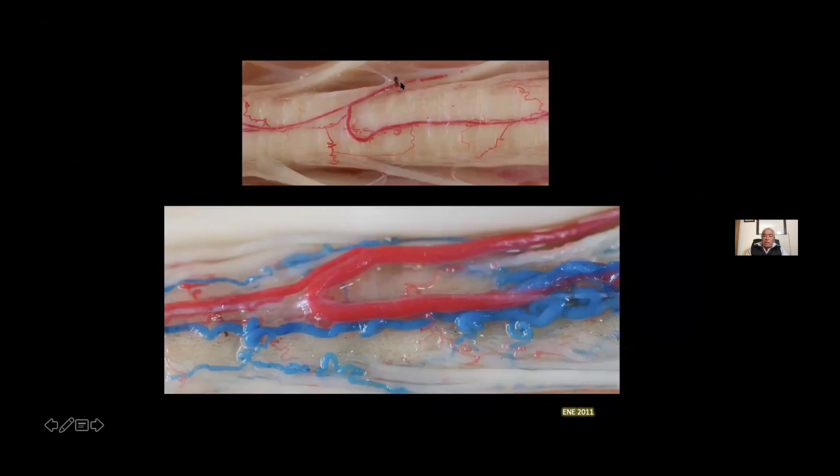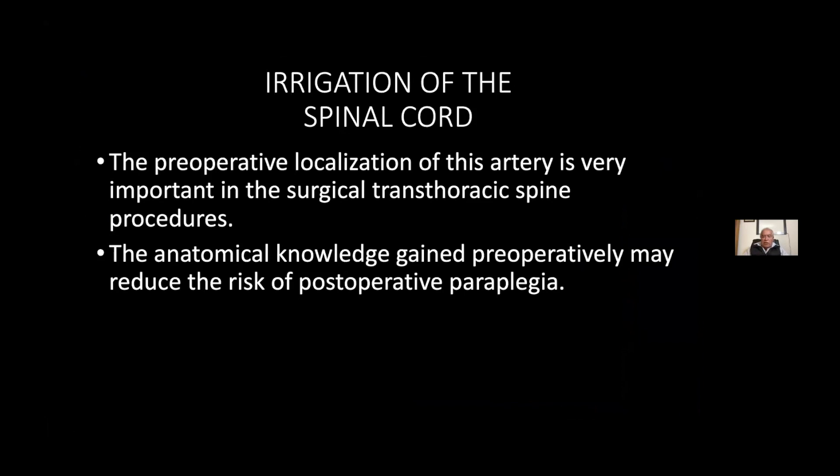They are very, very small, and this one is about one millimeter in diameter. The preoperative localization of this artery is very important in surgical transthoracic spine procedures. The anatomical knowledge gained preoperatively may reduce the risk of postoperative paraplegia.